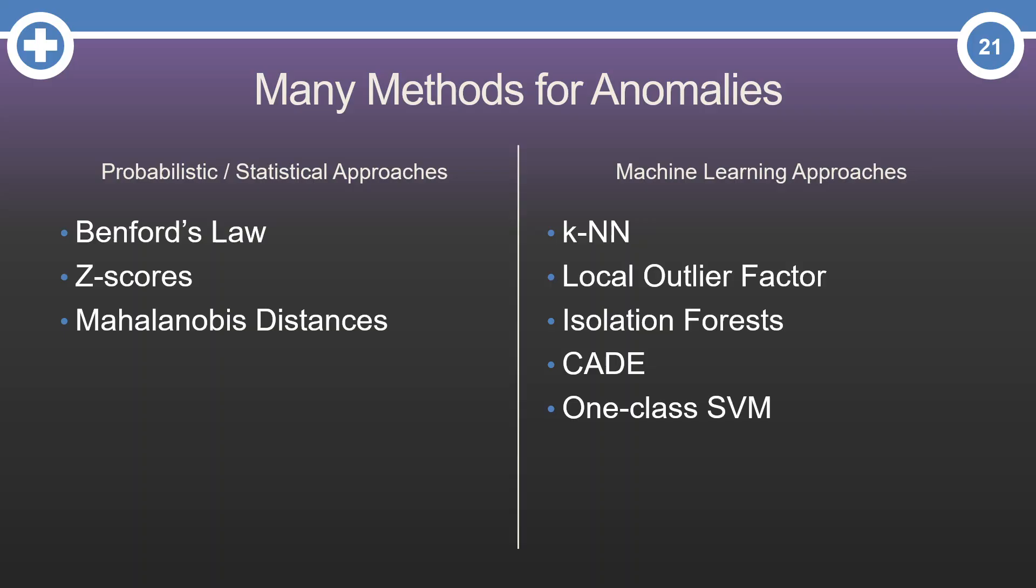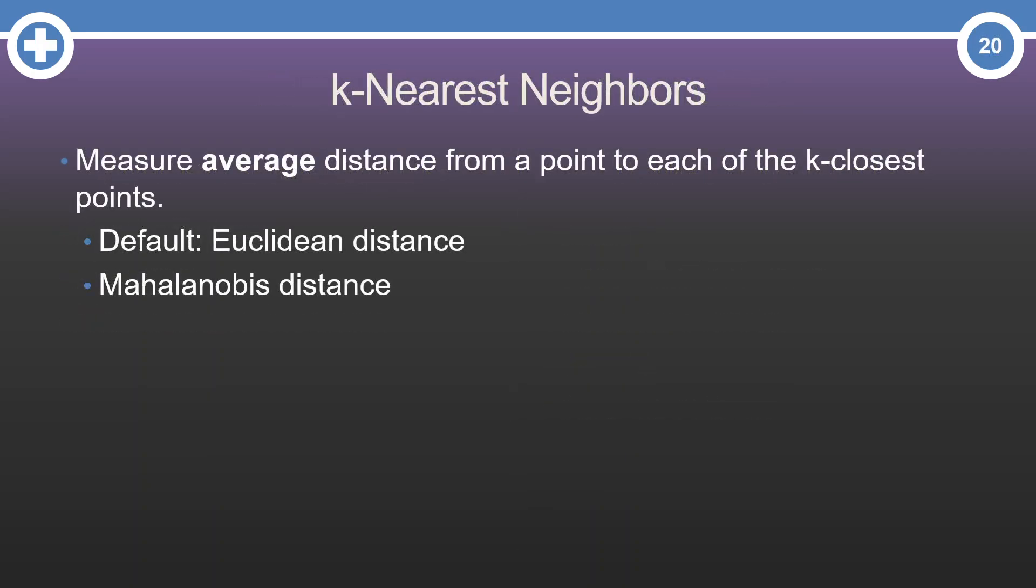we were transitioning to more of the machine-learning-based techniques to anomaly detection with k-nearest neighbors, called KNN. Let's continue to work down that list and look at the local outlier factor.